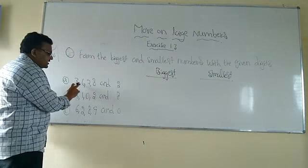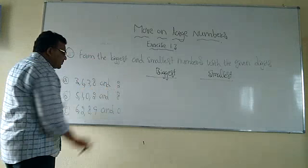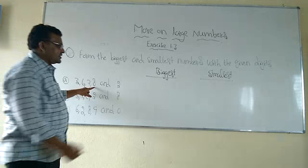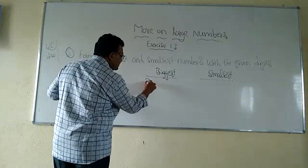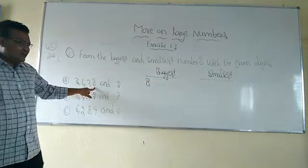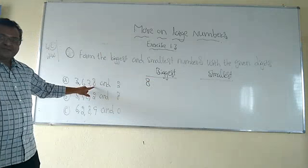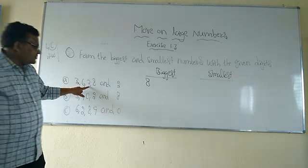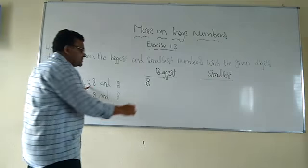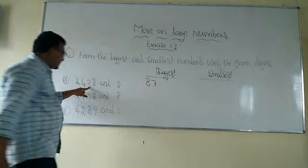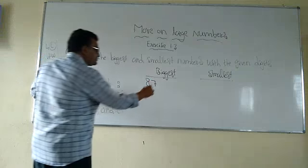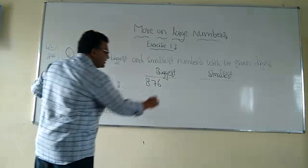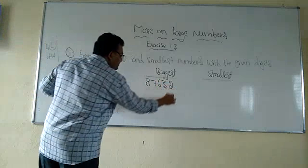Observe how we do it. The digits are three, six, seven, eight, and two. Among all these digits, the biggest one is eight — when writing the biggest number, we write that first. Next, after eight, the next bigger one is seven. Then after that, six. Then after that, three. Then after that, two.